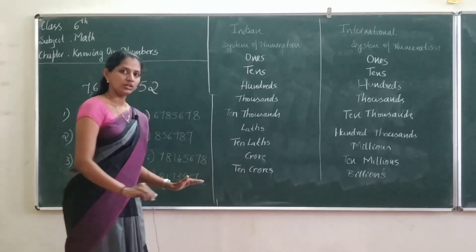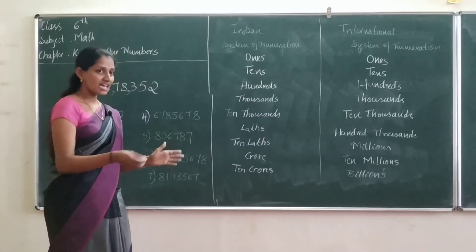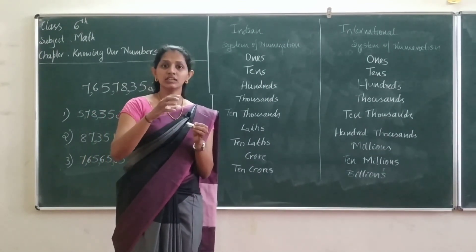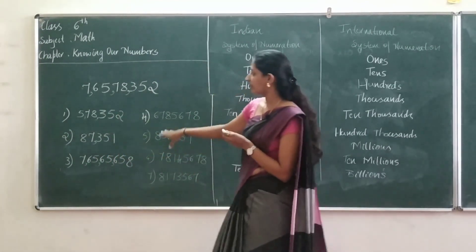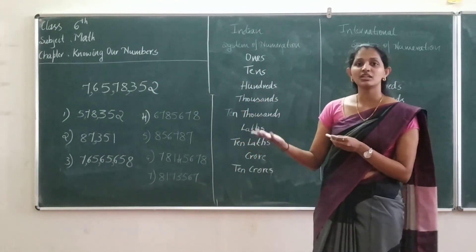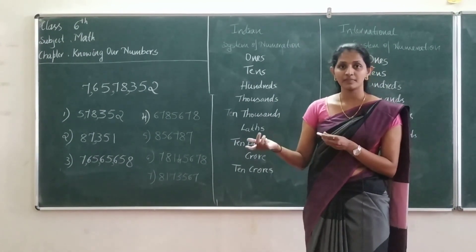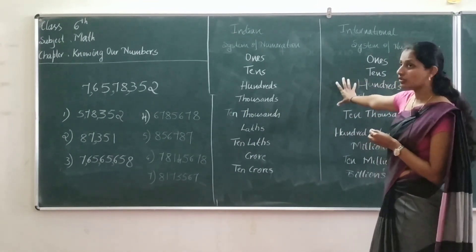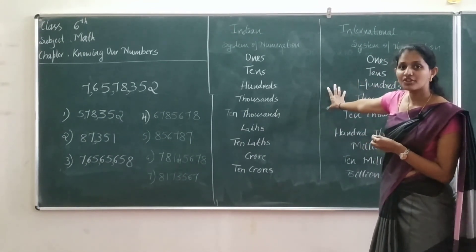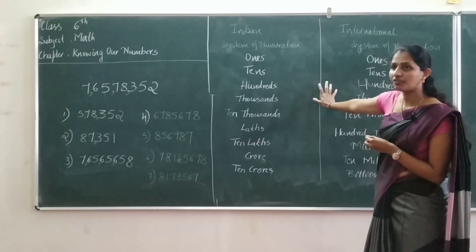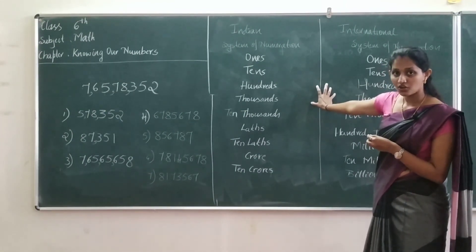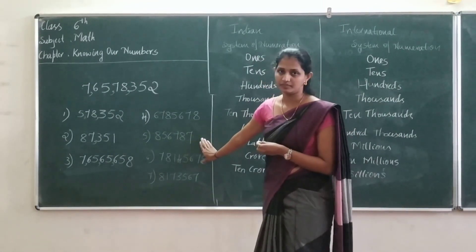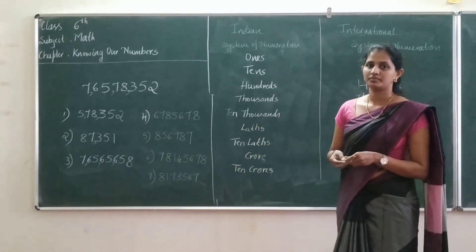Understood? So, in this class we learnt about how to put a comma in a number, about 6-digit numbers, 7-digit numbers, and 8-digit numbers, and the difference between the Indian system of numeration and the international system of numeration. This is very important — you have to write it down in your notebook. Thank you.